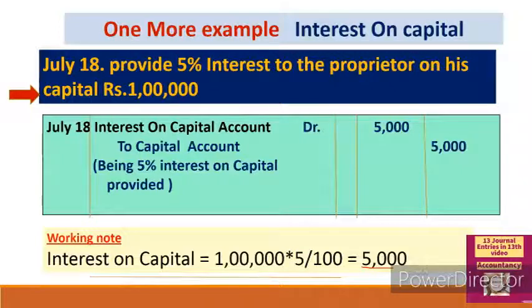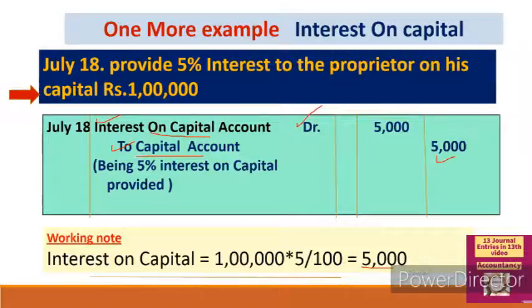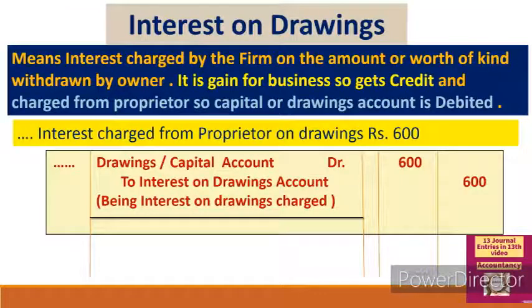Another example: provide 5% interest to the proprietor on his capital of 1 lakh. Interest = 1,00,000 × 5% = 5,000. Journal entry: interest on capital account debit to capital account credit 5,000 — being 5% interest on capital provided. Interest on capital is a business expense (nominal account, debited); capital is increasing so it is credited.